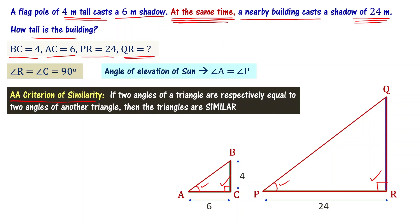If two angles of a triangle are respectively equal to two angles of another triangle, then the triangles are similar. This is the angle-angle (AA) criterion of similarity. Therefore, triangle ABC is similar to triangle PQR. So we look at the corresponding sides of the triangles.